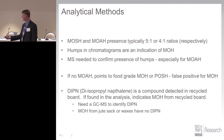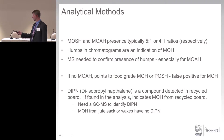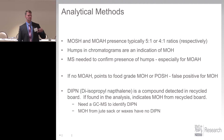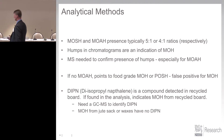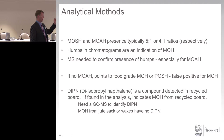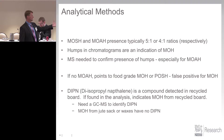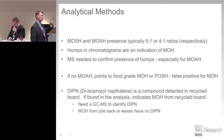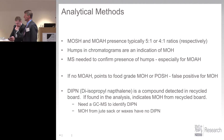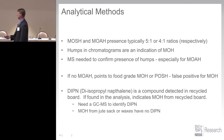MOSH and MOAH are typically at a 5-to-1 or 4-to-1 ratio. In the chromatograms, there are humps that are an indication of mineral oil. MS is needed to confirm the presence of the humps, especially for MOAH. DIPN is a compound from recycled board — it's a really useful marker compound. If you see DIPN, the mineral oil most likely came from recycled board as opposed to jute sack. This is important when you're trying to trace where it's coming from. If you have virgin carton board but still have mineral oils — do you see DIPN or not? That will tell you whether it came from the shipping container or the jute sack. If you don't have it, it's probably the jute sack. You need a GC-MS to identify DIPN. MOH from jute sacks or waxes will have no DIPN.